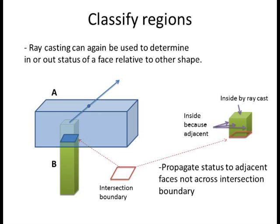We can still use a ray firing technique to determine point location inside or outside of each shell. Notice we don't need to test every face for location. If we test one face, we can usually propagate the status to adjacent faces, as long as we do not cross any intersection boundaries.